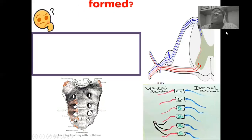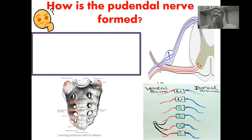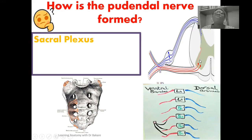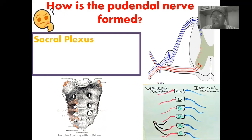The next question is how is the pudendal nerve formed? Even though we already know it's one of the branches of the sacral plexus, it's good to establish the basics behind its formation. To do that we need to look into the spinal cord. This is where we have the presentation of the spinal cord, and in it we have a collection of rootlets in the ventral region, highlighted here in red, and this is referred to as the ventral root — because it is located in the anterior part.